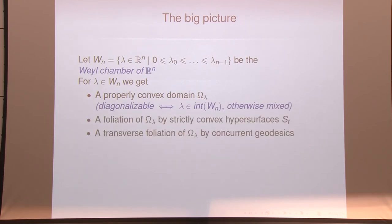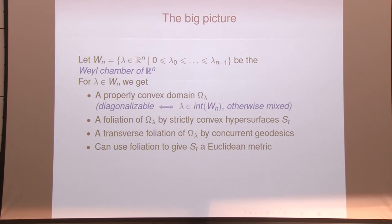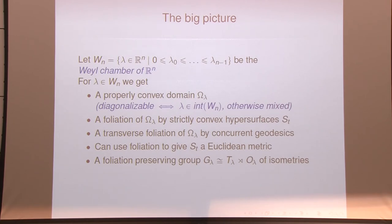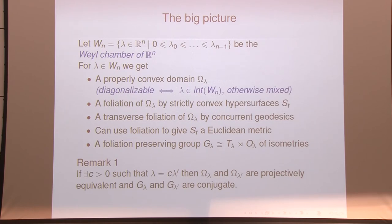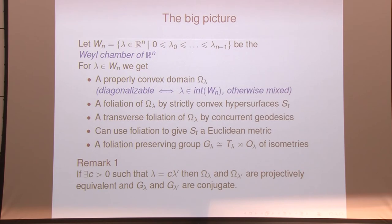For each of these domains we've seen that we can produce a pair of foliations. You can use these foliations to endow the horospheres with a flat metric. There's a group preserving the horospheres, and it turns out that group also preserves this metric. There's a slight overparameterization: if two elements of the Weyl chamber differ by scaling, you're getting the same domain up to projective equivalence. But for parameterization purposes this turns out to be useful.